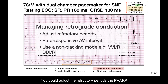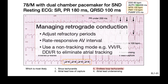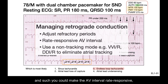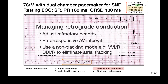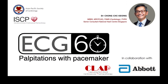There are ways to manage the retrograde conduction: you could adjust the refractory periods, the PVARP, and such; you could make the AV interval rate-responsive, shortening the AV interval; or we could use a non-tracking mode such as VVI or DDI to eliminate atrial tracking. This has been ECG in 60 seconds.